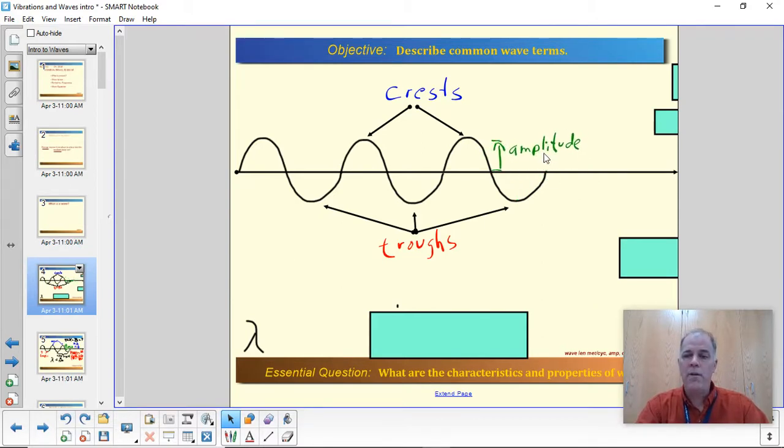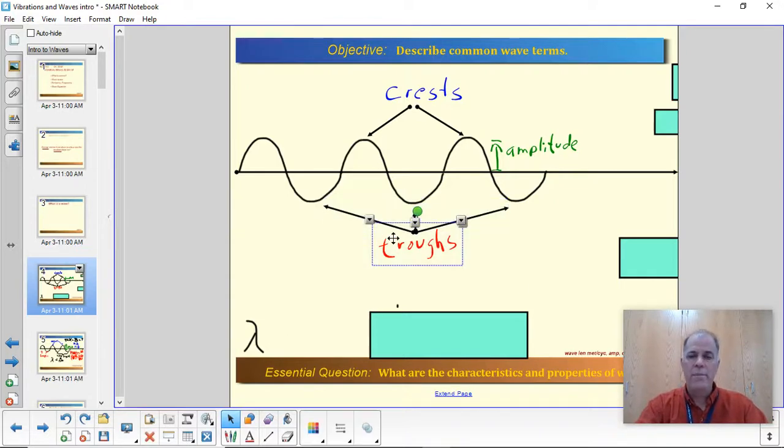Now, the common error that students make is they think that the amplitude is from the trough to the crest. And it's not. Amplitude is from the neutral position to the crest, or from the neutral position to a trough. Either one of those. Draw a picture of this. It's easier to remember this stuff if you write them down.